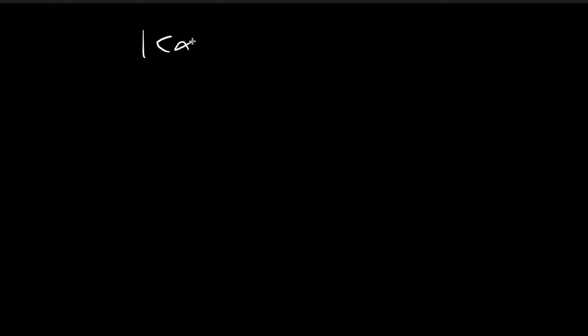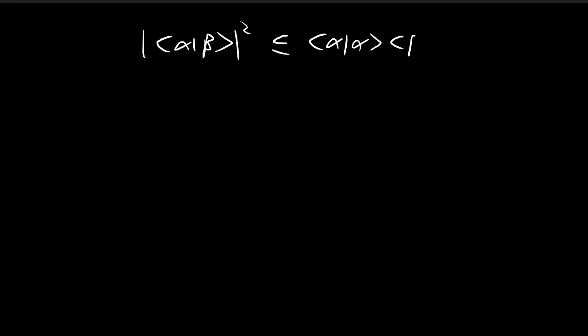The Cauchy-Schwarz inequality tells us that the inner product between two vectors, if you take the absolute value squared, this expression is always smaller than or equal to the inner product of the first vector with itself times the inner product of the second vector with itself.